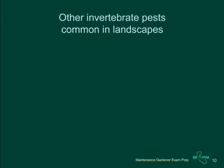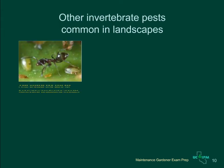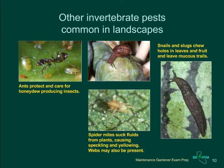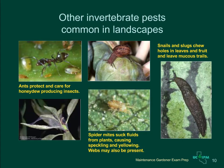Here are some other invertebrates that occur in landscapes that you should be able to recognize. These include ants, which serve many beneficial functions in the landscape such as eating some pests, but they can also be pests themselves, usually when they protect aphids and other insects from their natural enemies. Snails and slugs are mollusks that chew irregular holes in leaves and other succulent plant parts. They often feed at night but leave a silvery trail of mucus behind. Spider mites are very tiny arachnids which cause speckling on leaves. When there are lots of them, they often leave webbing, which is how they get their name — spider mites.